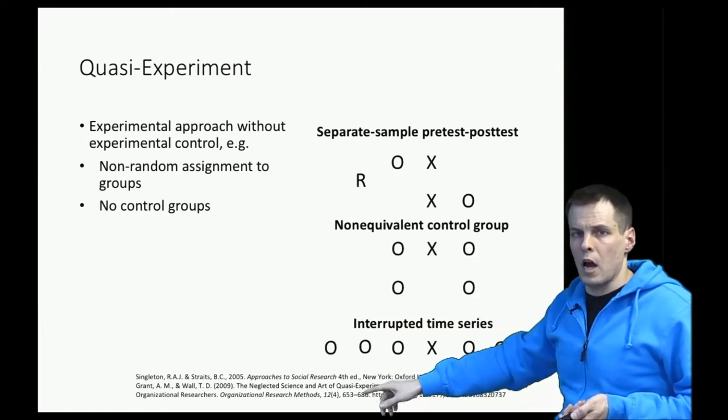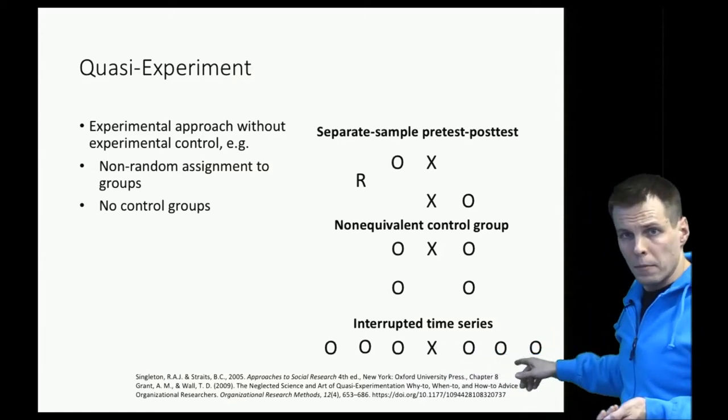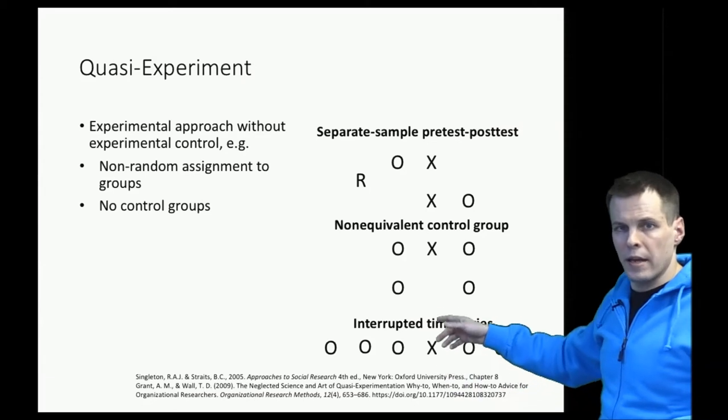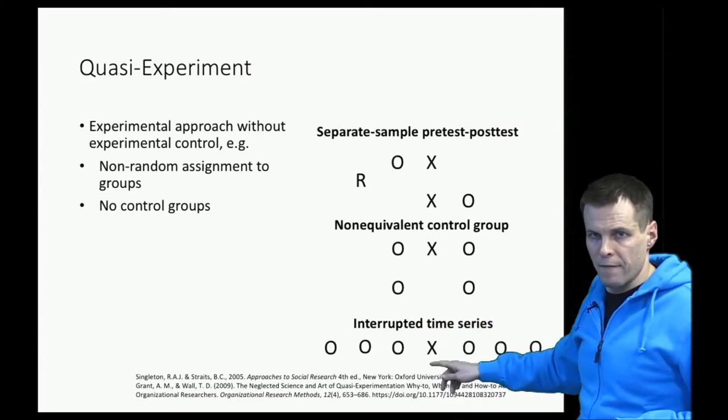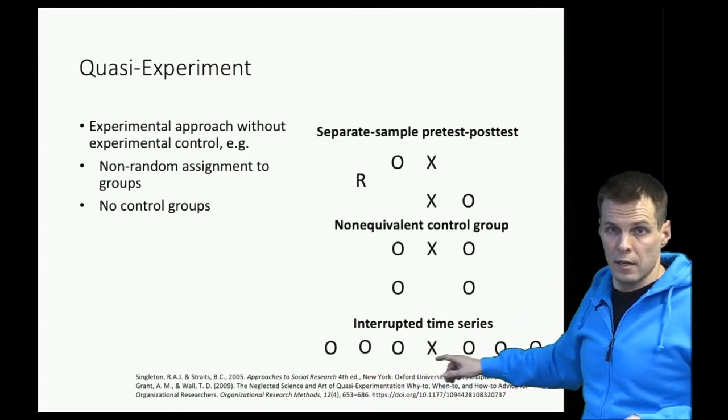Another one is interrupted time series design. So we follow some units or some companies, people, over time, then there is an exogenous shock that happens, some kind of exogenous event. For example, new regulation is implemented in markets independently of these organizations.